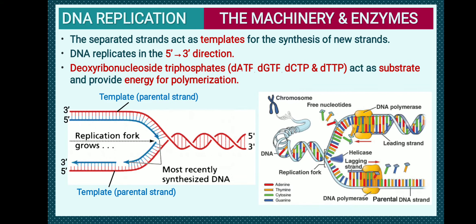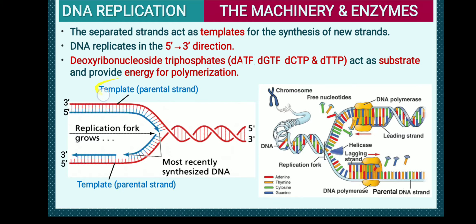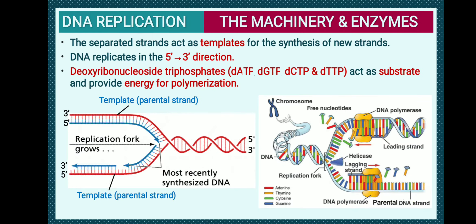The parental strand running from 3' to 5' requires a complementary strand synthesized in the 5' to 3' direction. Since a 3' primer is available, DNA polymerase can carry out synthesis in a continuous way. This continuous synthesis of DNA occurring on this strand is called the leading strand.